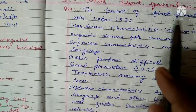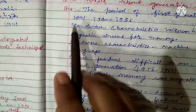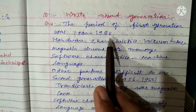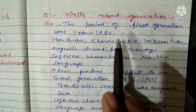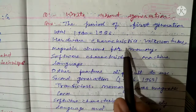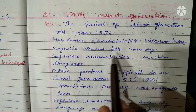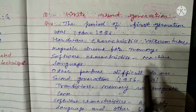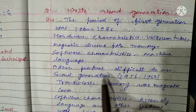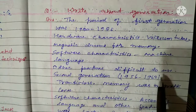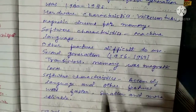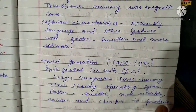Write about the generations of computers. The period of the first generation was 1940 to 1956. Hardware characteristics: vacuum tubes, magnetic drums for memory. Software characteristics: machine language. Other features: difficult to use. Second generation: 1956 to 1963. All these things have already been discussed in the book as well.